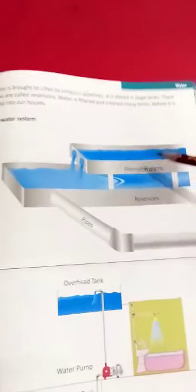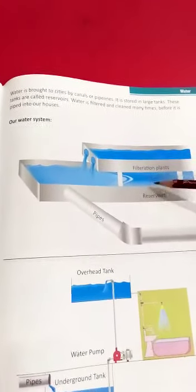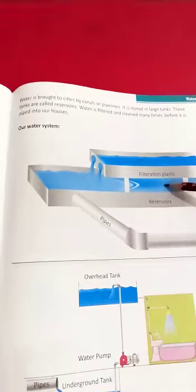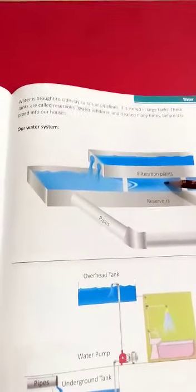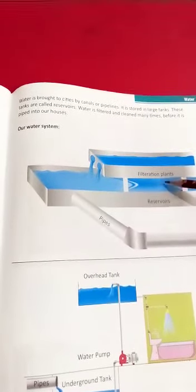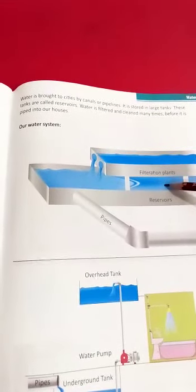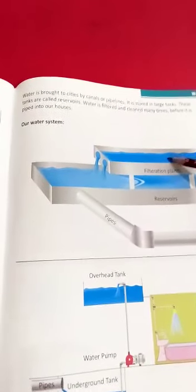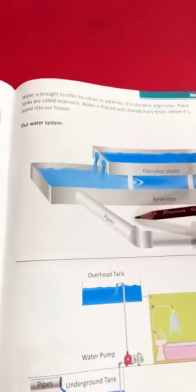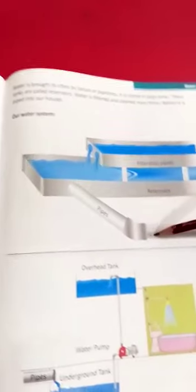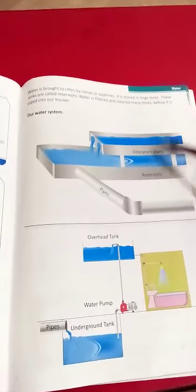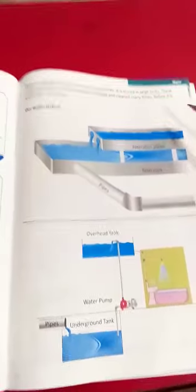So first, they store the water in large tanks, then they filter the water, and this filtered water comes into our houses through pipes. This is the whole process of how we get water.